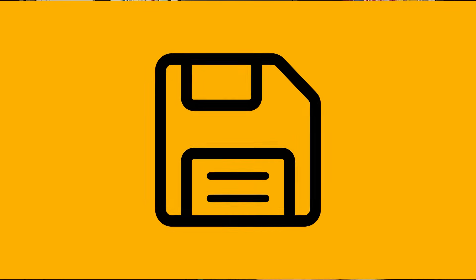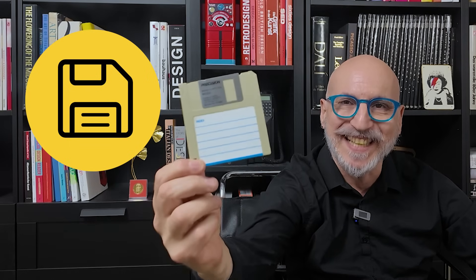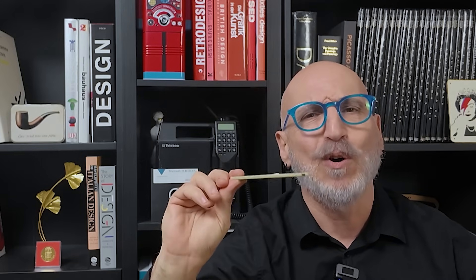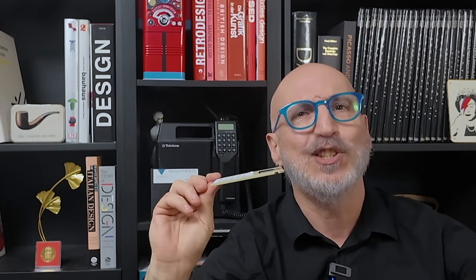Why does the save icon still look like a floppy disk, even if you never used one? You know this icon — the save button. But here's the strangest part: it's a floppy disk. This looks more like a drink coaster than a storage device. So why is an obsolete bit of plastic still the universal symbol of saving your work?